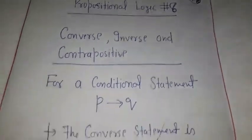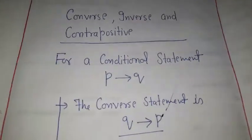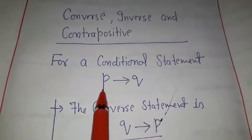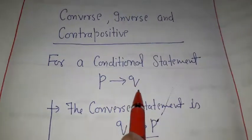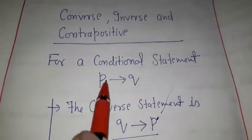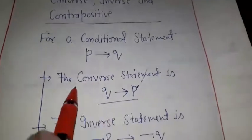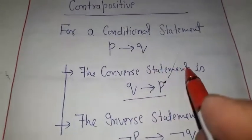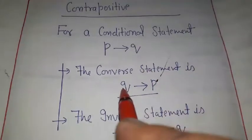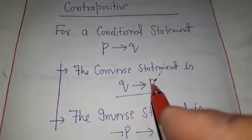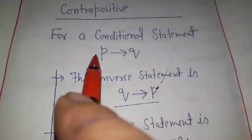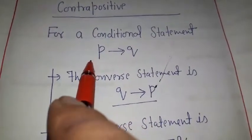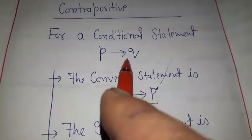For example, let us consider a conditional statement: if P then Q, that is P implies Q. Then the converse of the statement P implies Q is denoted by Q implies P. So if we have a conditional statement 'if P then Q', its converse is 'if Q then P'.